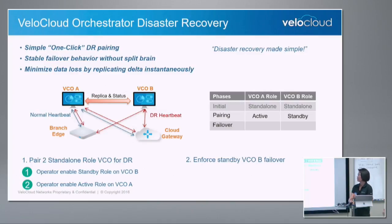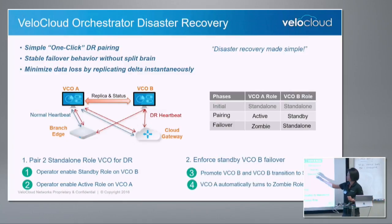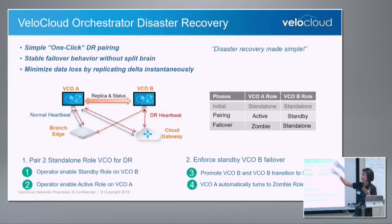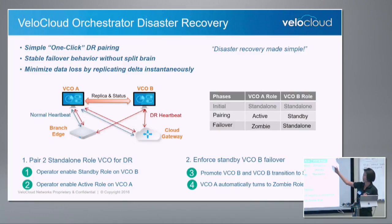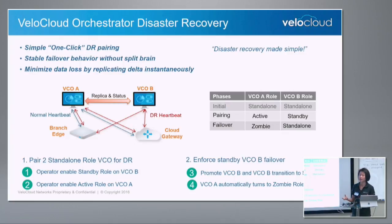If tomorrow I want to make the data center with VCOB the active — for a data center migration scenario — the operator logs into VCOB and manually promotes the standby. VCOB becomes the new standalone, which is the operational VCO. All the branches get this message and will talk to VCOB. For VCOA, we introduced the zombie role: it knows its standby has been promoted as the new VCO, so it should not replicate data, not take actions for the edges, and not accept configuration or database changes. VCOB will be the new one, and all the edges will only talk to VCOB.